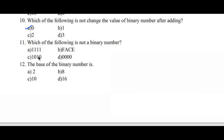Question number eleven: which of the following is not a binary number? Options: A) 1111, B) FACE, C) 1010, D) 0000. Option B, FACE, is the right answer because it is a hexadecimal number. The remaining options consist only of bits 0 or 1, so they are binary numbers.